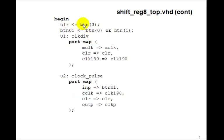Then we'll set clear to button 3. Button 01, you remember, is just button 0 ORD with button 1. And then we have the port map for clock div, bringing out the clock 190. We have the port map for clock pulse, in which case the input is button 01, you remember, and the output is clock P.